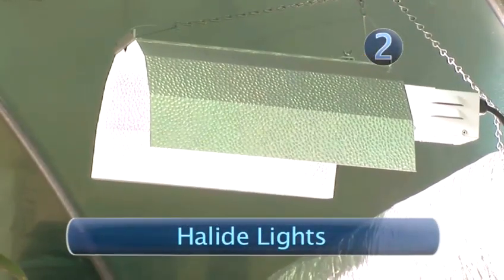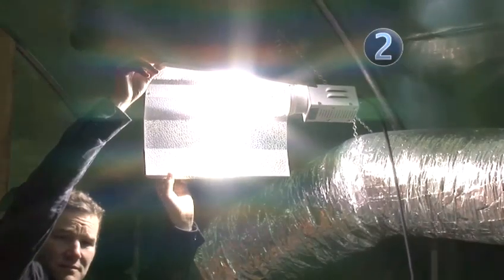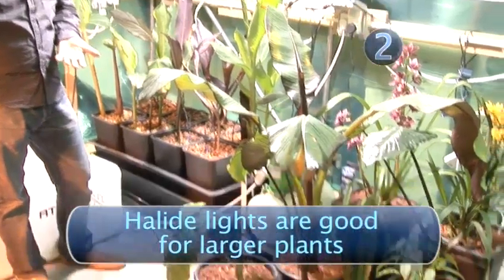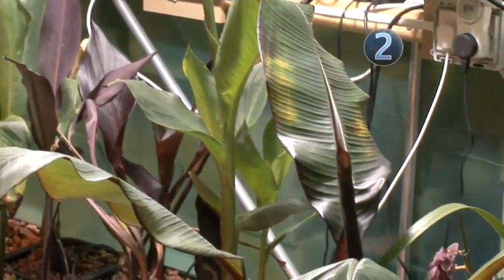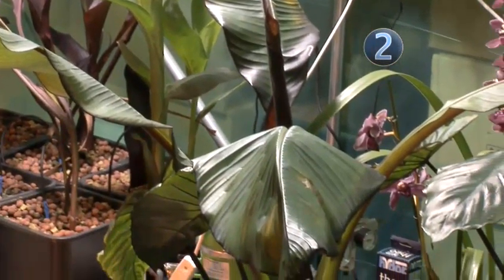Step 2. Halide Lights. Halide lights are much more powerful than fluorescent. They're used for bigger plants during the vegetative growth stage. The light they give off is pleasing to the eye with very good colour rendition therefore they're often used for plants that are on display. This halide light contains a single 600 watt bulb.